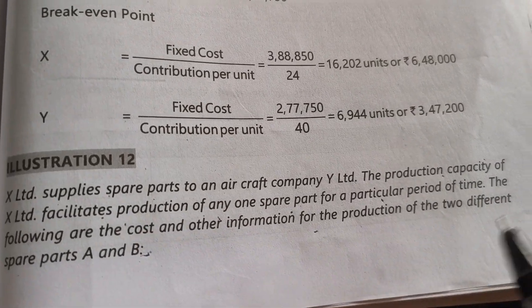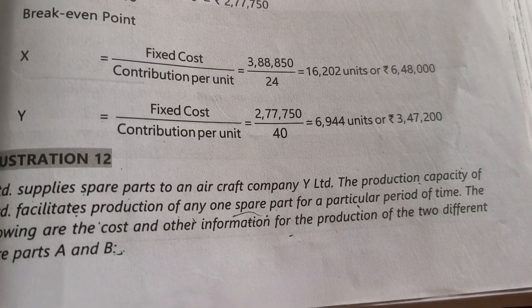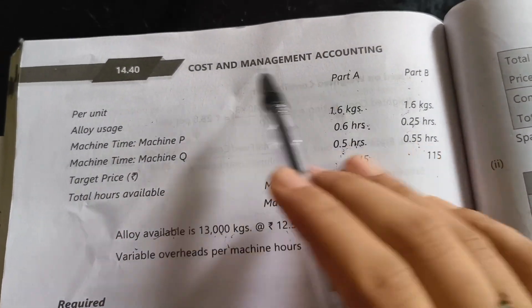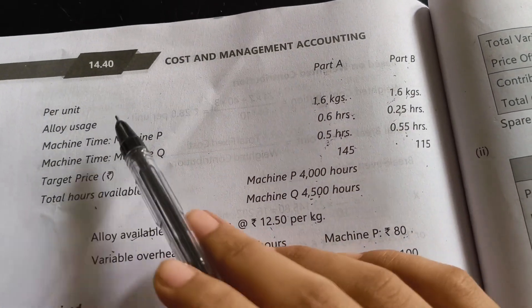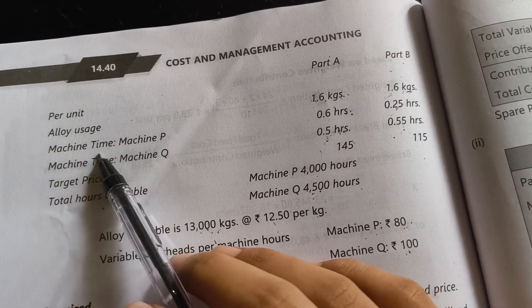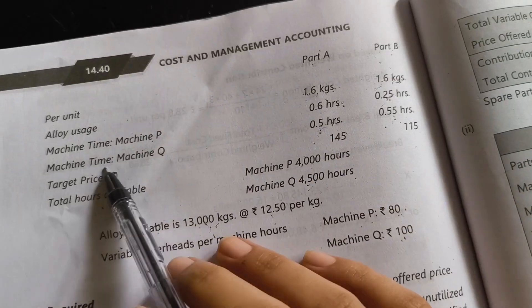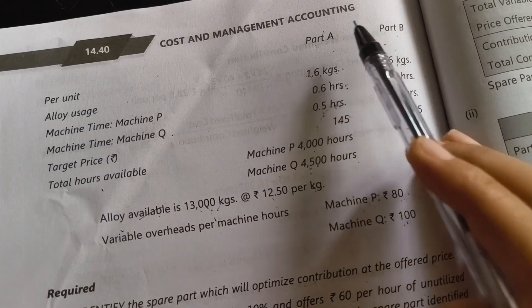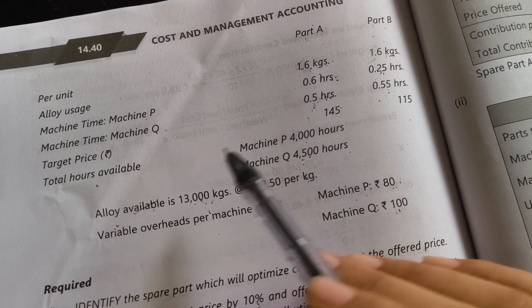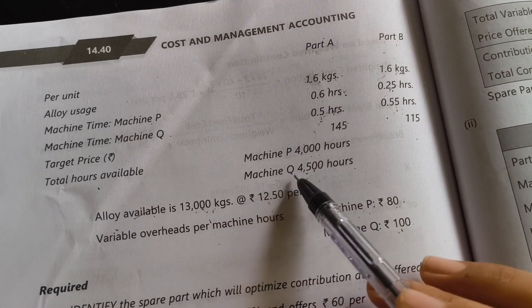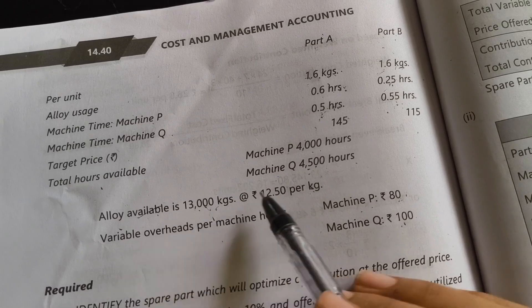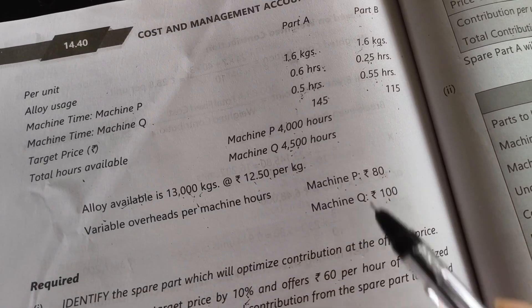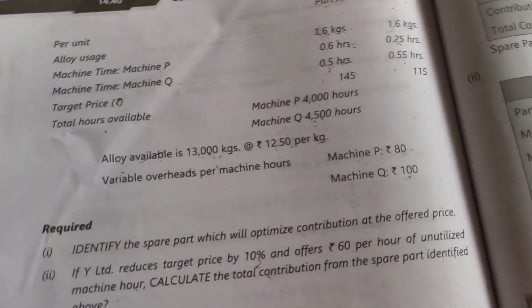They are producing two spare parts and they could produce only one spare part at a time. The per unit usage for part A and part B is given: alloy usage 1.6 kg for both. Machine P: 0.6 hours for A, 0.25 hours for B. Machine Q: 0.5 hours for A, 0.55 hours for B. The selling price is Rs.145 for part A and Rs.115 for part B. Total hours available: machine P is 4,000 hours, machine Q is 4,500 hours. Alloy available is 13,000 kilograms at Rs.12.50 per kilogram. Variable overheads: machine P Rs.80 per hour, machine Q Rs.100 per hour.